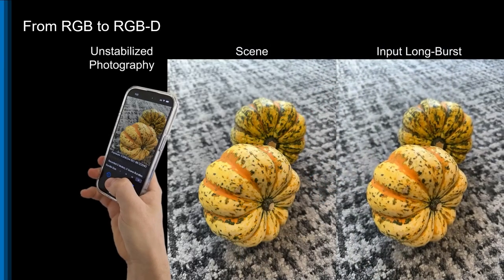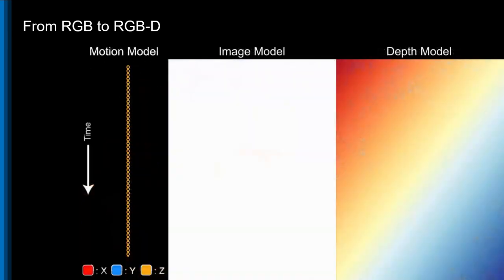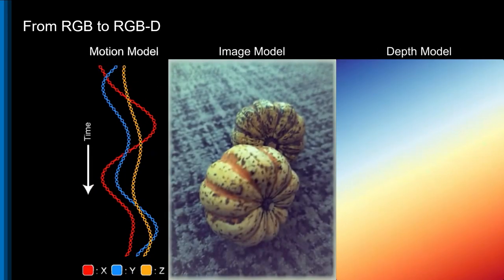In this setting of two gourds placed on a carpet, we see how SOAP's planar depth components fit the ground plane.